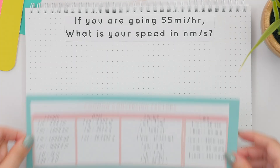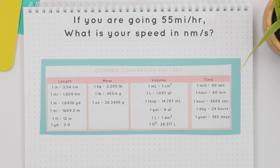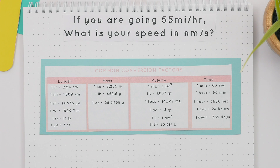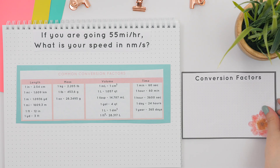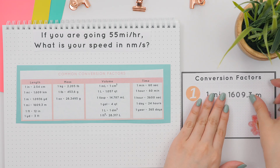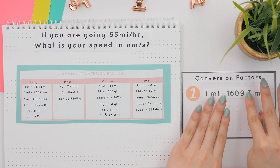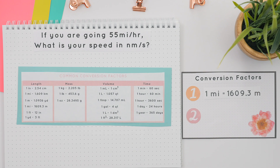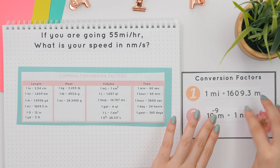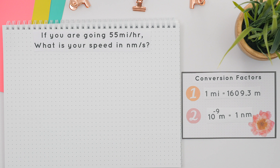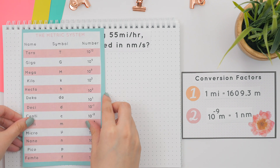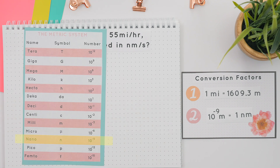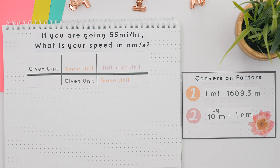Let's convert miles to nanometers by choosing the conversion factors we'll need. The first conversion factor must have the same unit as our given unit, which is miles — that allows us to get to meters. The second conversion factor must have meters in it, and we will use the metric system to help us go from meters to nanometers.